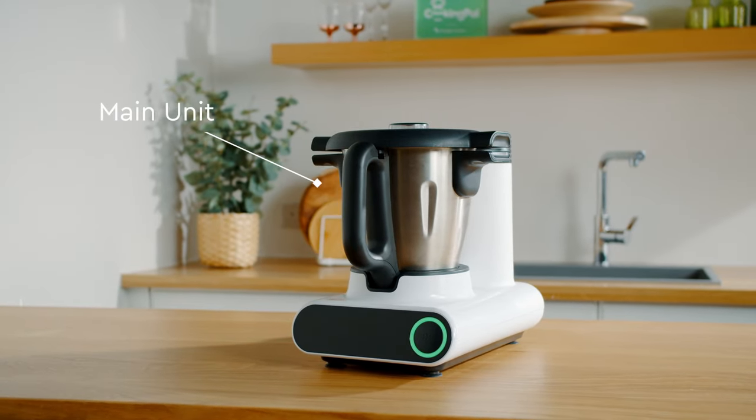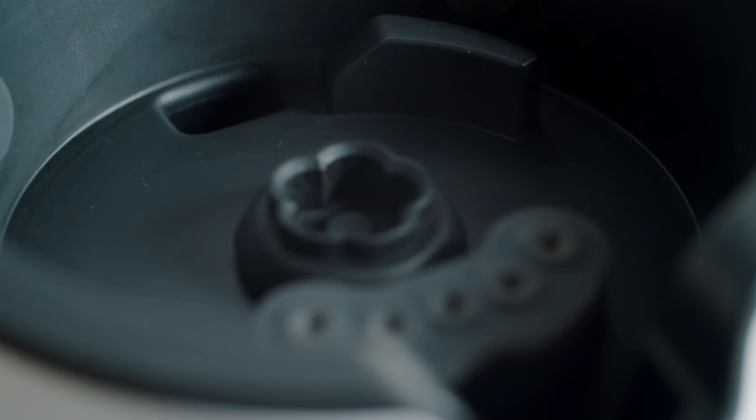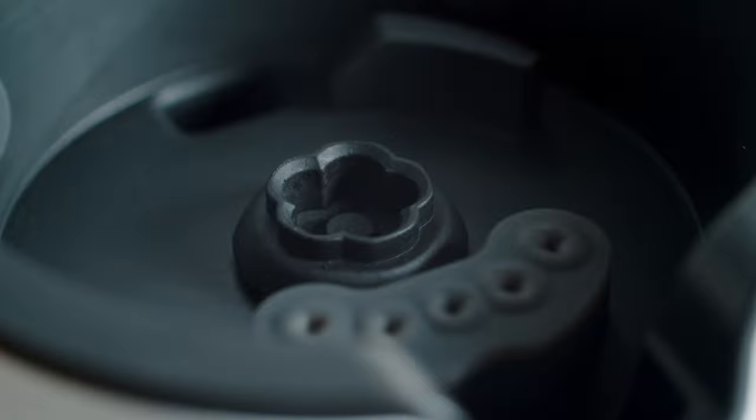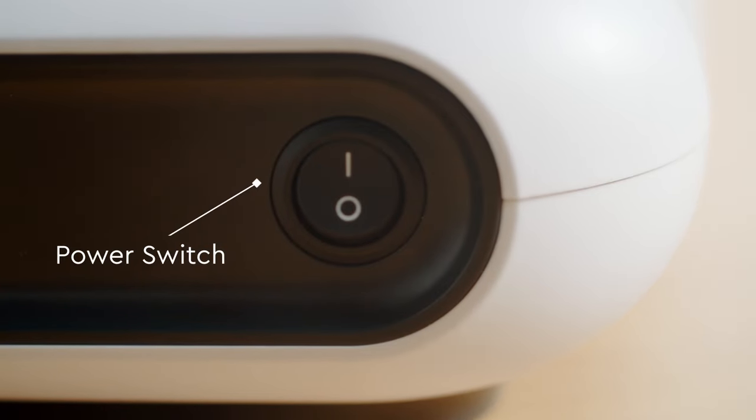The main unit is the engine behind your Molto. On the main unit, we have the motor at the back and this is our mixing bowl. Under the bowl, we have the heating element and the clutch. Then at the back, you will find the switch.